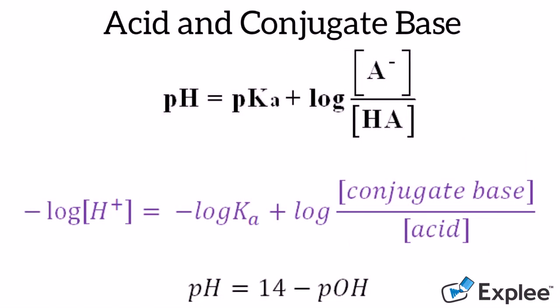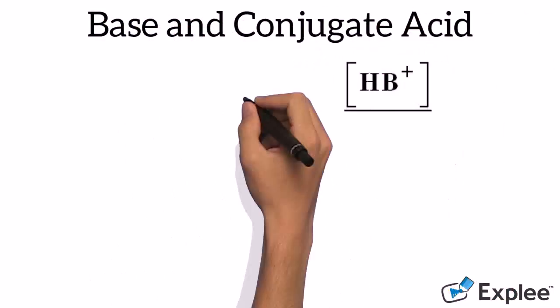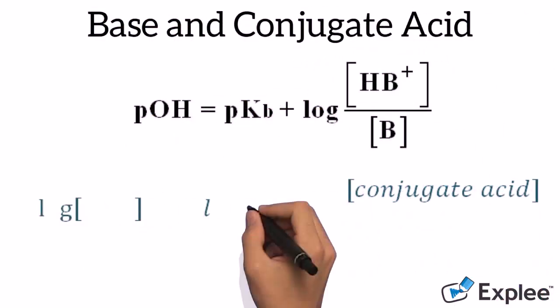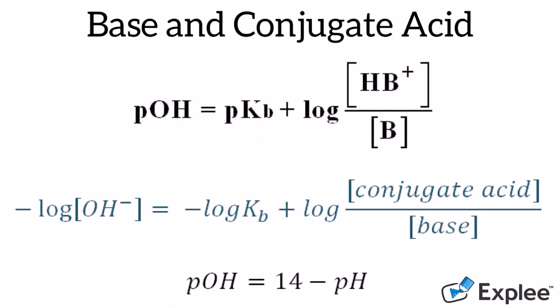This equation can also be used for bases. They're basically the same but account for different values. For basic buffers, pOH is the negative log of the concentration of OH minus. pKb is the negative log of the base dissociation constant. HB plus is the concentration of the conjugate acid or salt, and B is the concentration of the base. pOH can also be equal to 14 minus the pH.